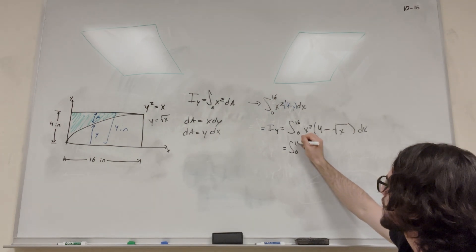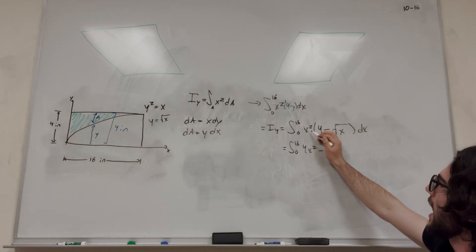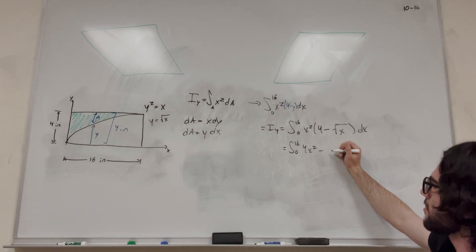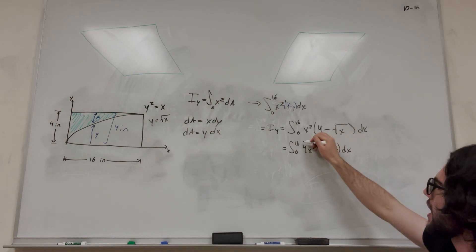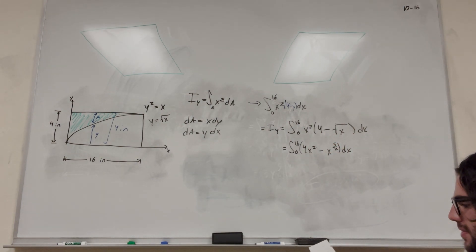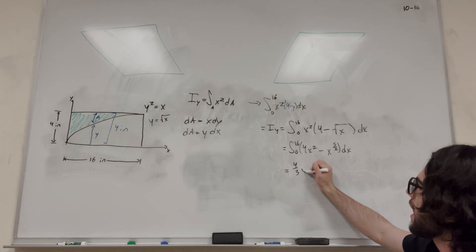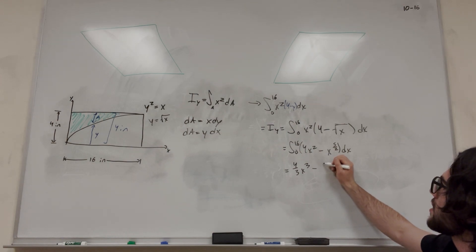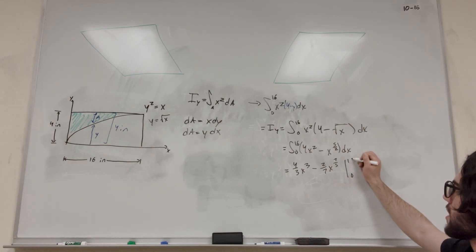Let's expand this from 0 to 16. It's going to be 4x squared minus x squared times square root of x, which is x to the 5 halves, dx. Now we just have this pretty simple integral to solve. Taking the integral, we get 4 over 3 x cubed minus 2 over 7 x to the 7 halves, evaluated from 0 to 16.